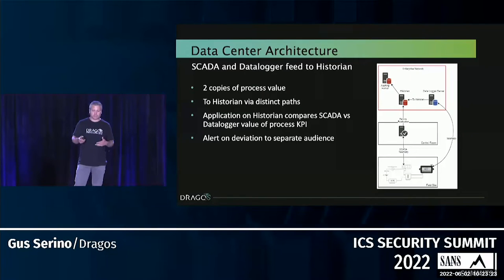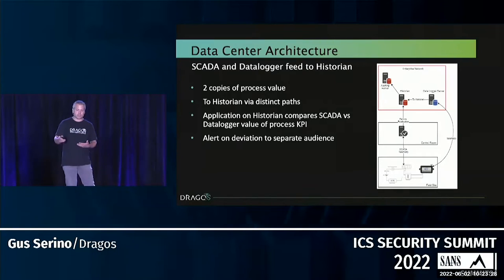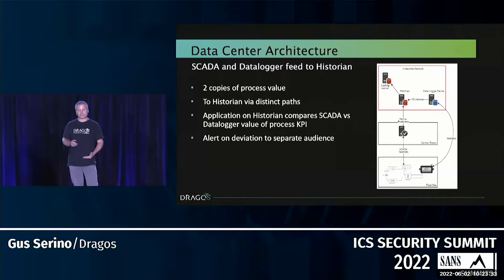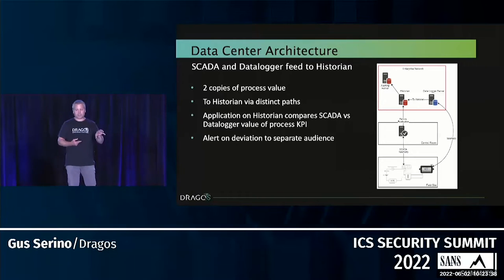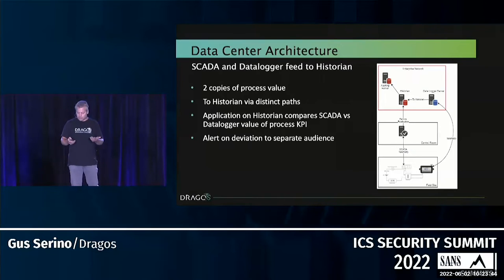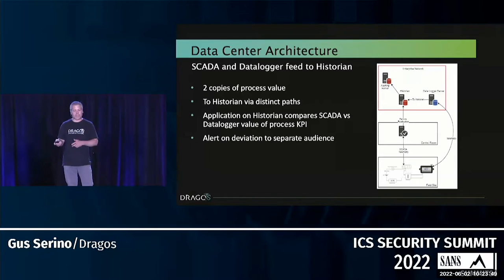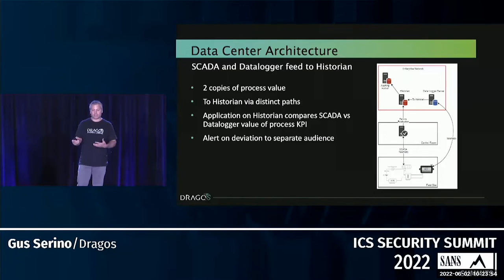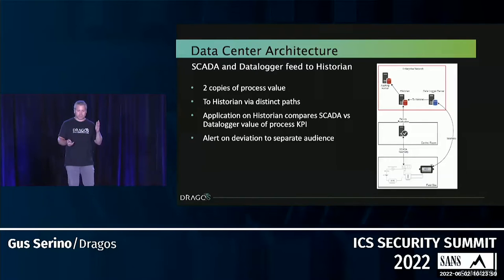In the data center architecture, you see the independent path to the data logger server on the enterprise network, alongside the normal SCADA telemetry path through the HMI. Both land in the historian, and a separate application sitting on top compares those two values and alerts if they're different. That's the crux of how we used what we already had — no new cybersecurity technology needed, just a way to validate those most important signals.